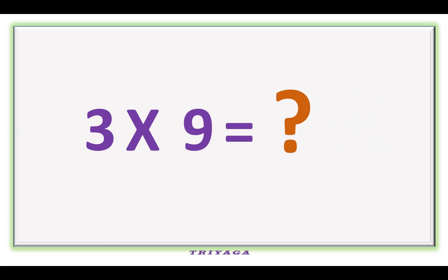3 times 9 is how much? It is 27. 3 times 6 is how much? It is 18.